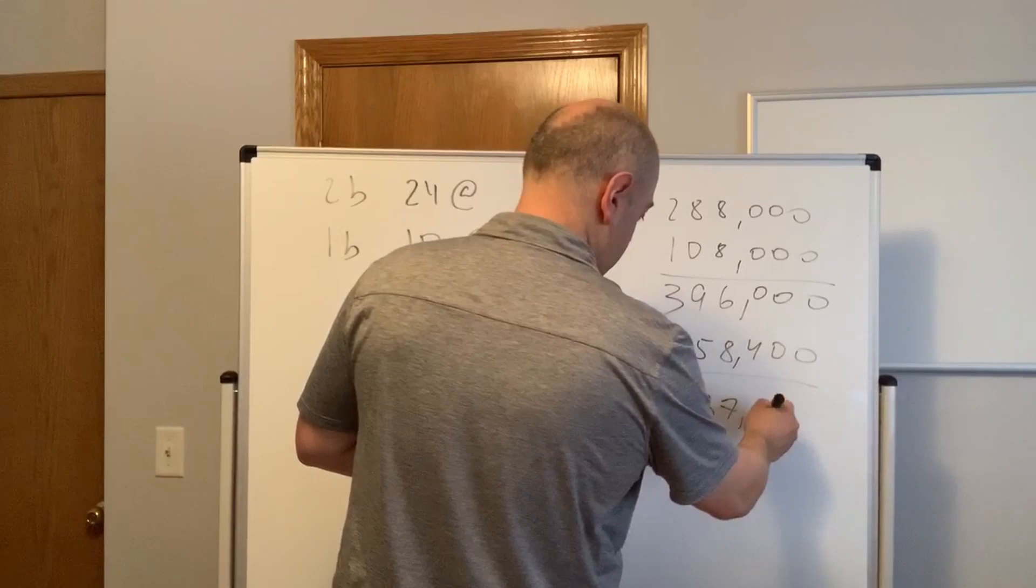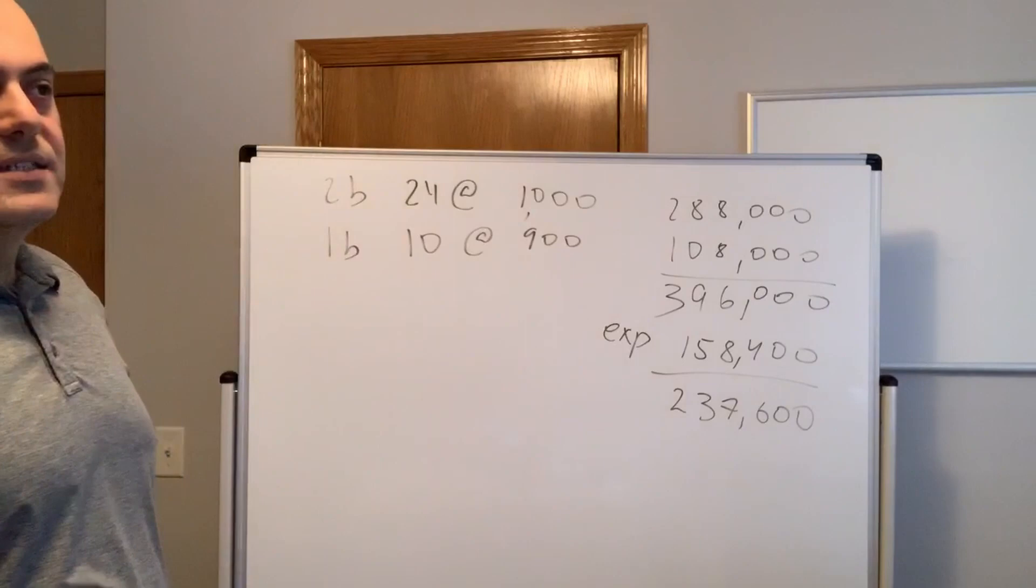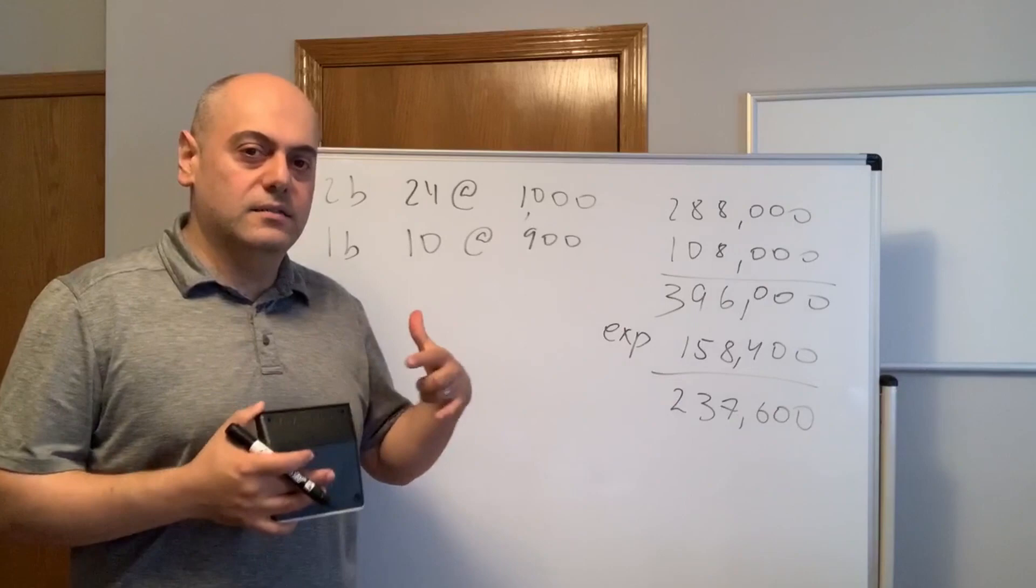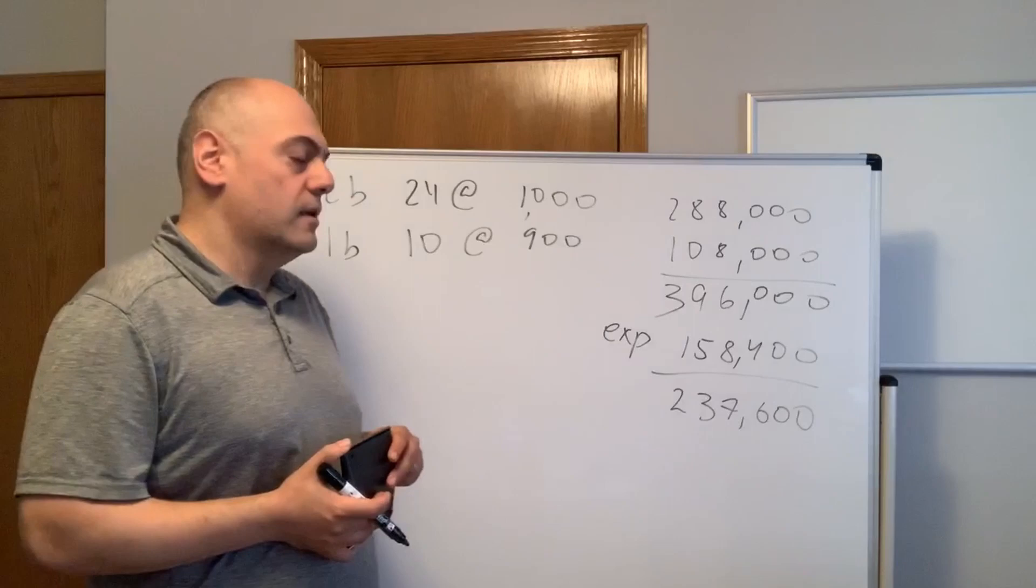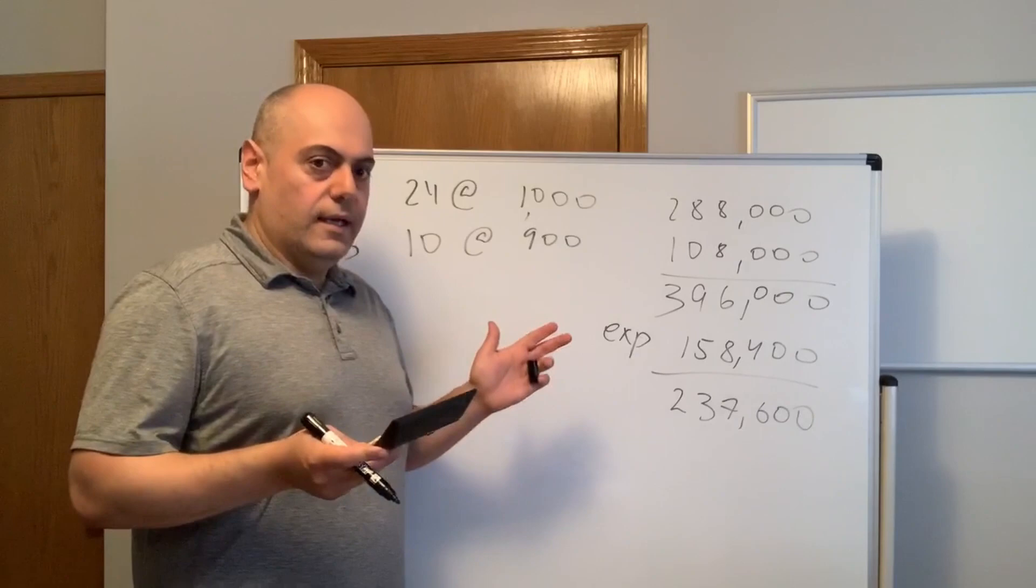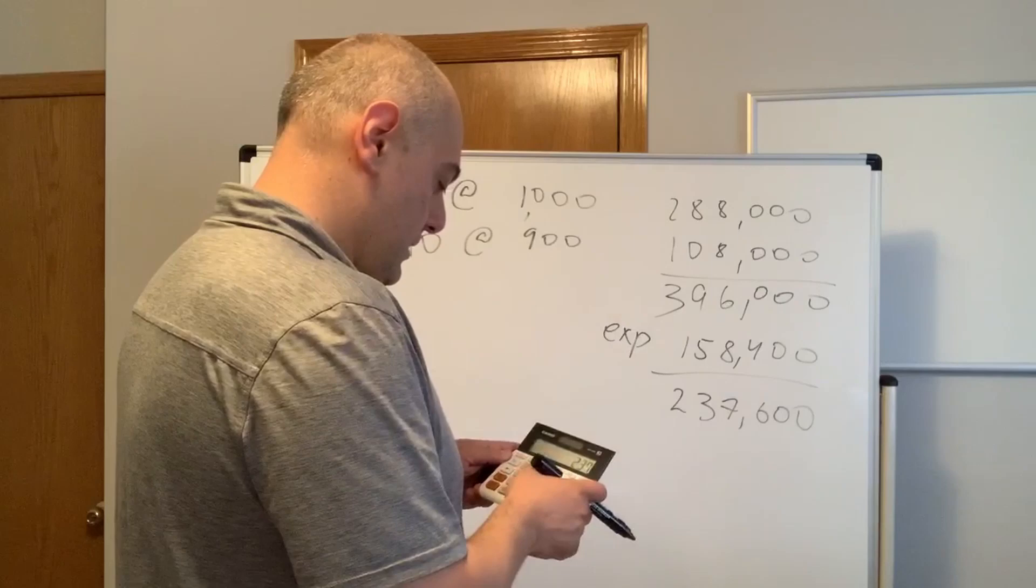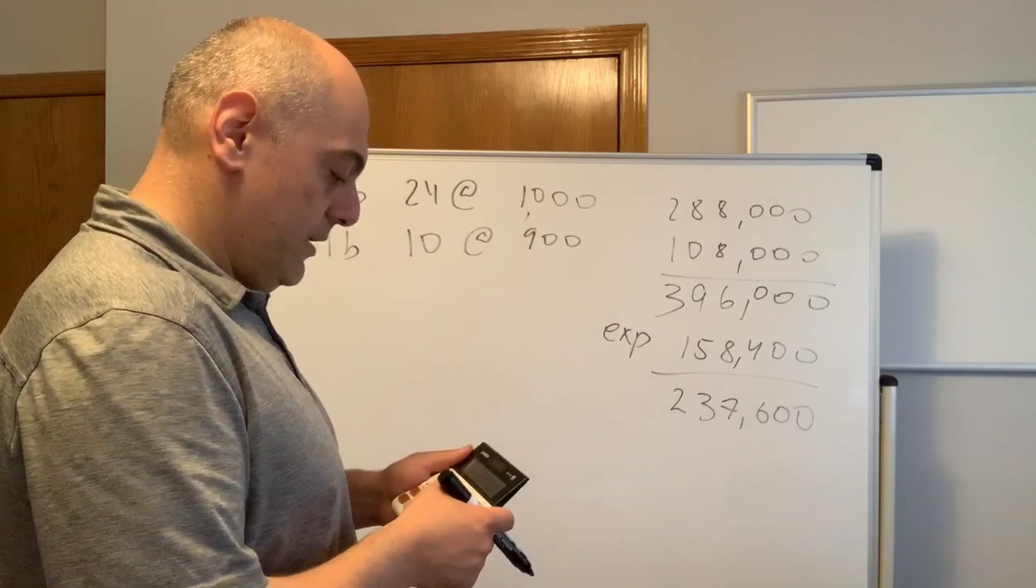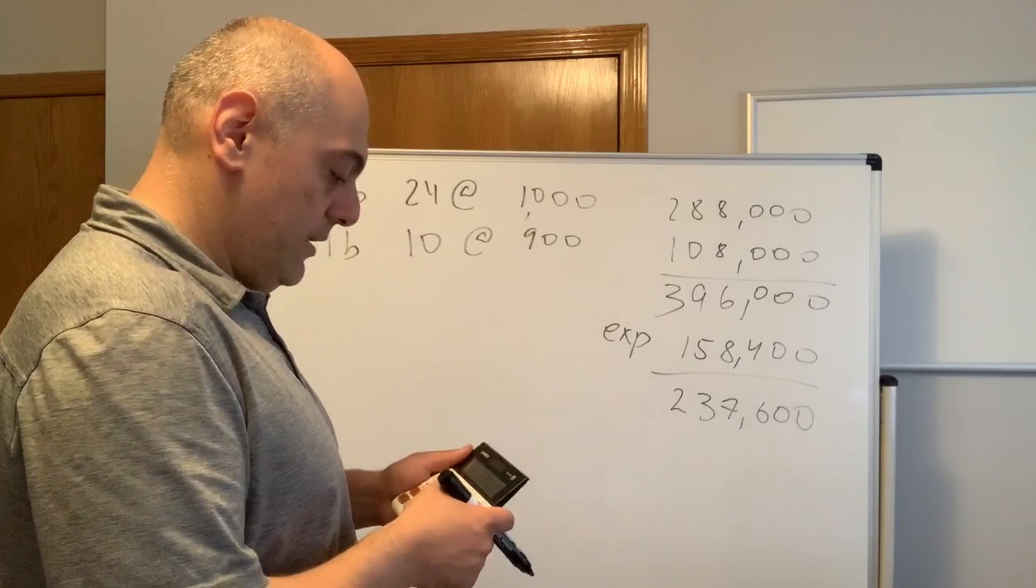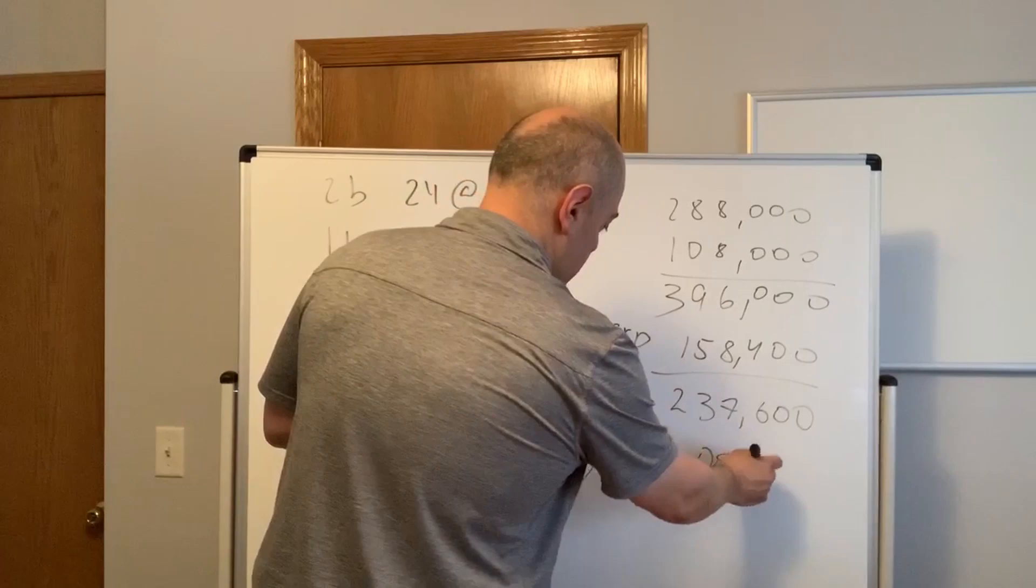So this building is a little older, the area is not totally bad but it's so-so, some sketchy people there. I drove by the property last week. So I'm going to offer this owner 8% cap rate, so I want my money that I invest to earn 8%. So basically what we do is we divide $237,600 by 8% and we come up with $2,970,000. So can you see this? So this is how much you should offer for this building.